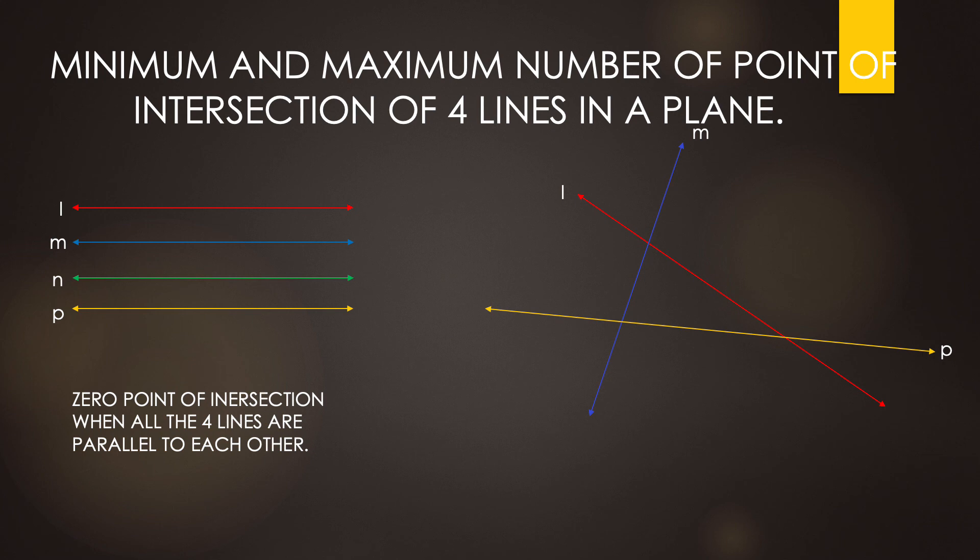Now, draw fourth line that is line N such that line N intersects line L, P and M at one distinct point each. Hence, you can see total six points of intersection are there when four lines intersect each other in a plane.